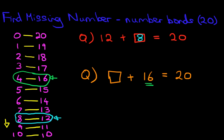What number added to 16 gives 20? It is 4. Let's write that down. 4 plus 16 equals 20. And it really is as simple as that.